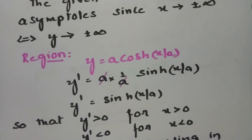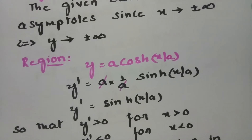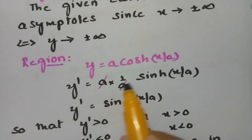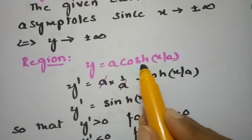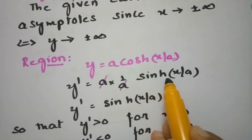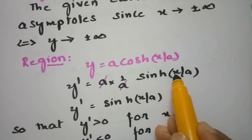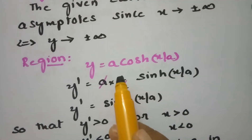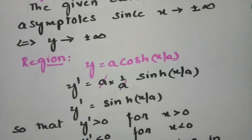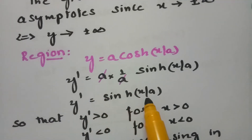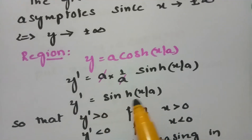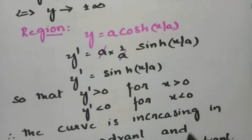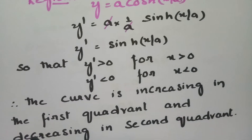Coming to the region: y = a·cosh(x/a). Taking the derivative with respect to x, since a is constant and the derivative of cosh(x/a) is sinh(x/a), multiplied by 1/a, the a's cancel and y' = sinh(x/a). If x is positive, y' is positive; if x is negative, y' is negative. Therefore, the curve is increasing in the first quadrant and decreasing in the second quadrant.